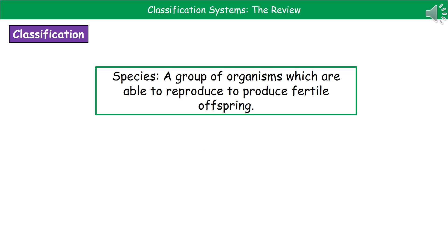The last step of classification is species. One of the questions I used to love asking for two marks was the definition of the term species. To get two marks, it is a group of organisms which are able to reproduce — that gets your first mark — and the second mark is for saying to produce fertile offspring. If you write that, you'll get two marks.